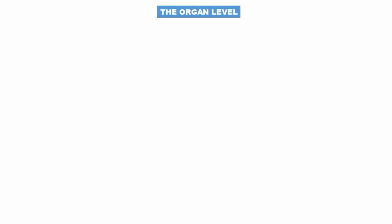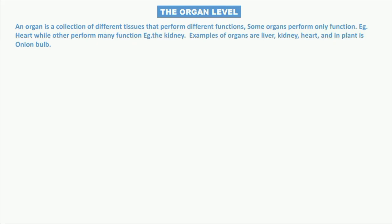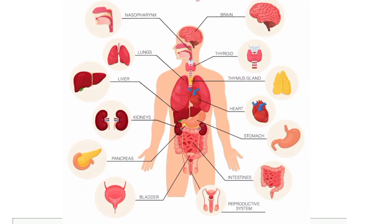The organ level: an organ is a collection of different tissues that work together to perform specific functions. Some organs perform only one function — for example, the heart — while others perform many functions, like the kidney. Examples of organs include the liver, heart, and in plants, the onion bulb.